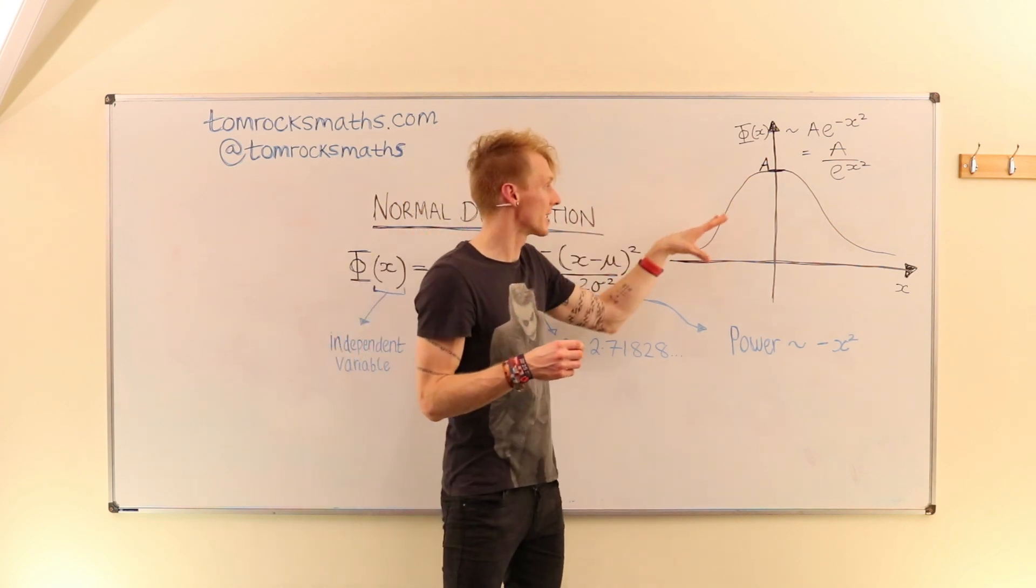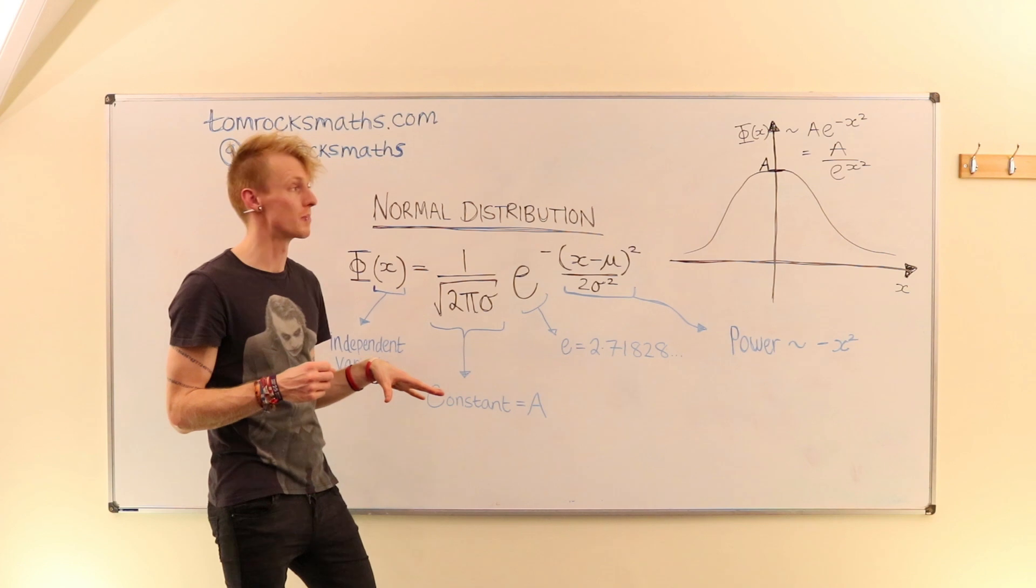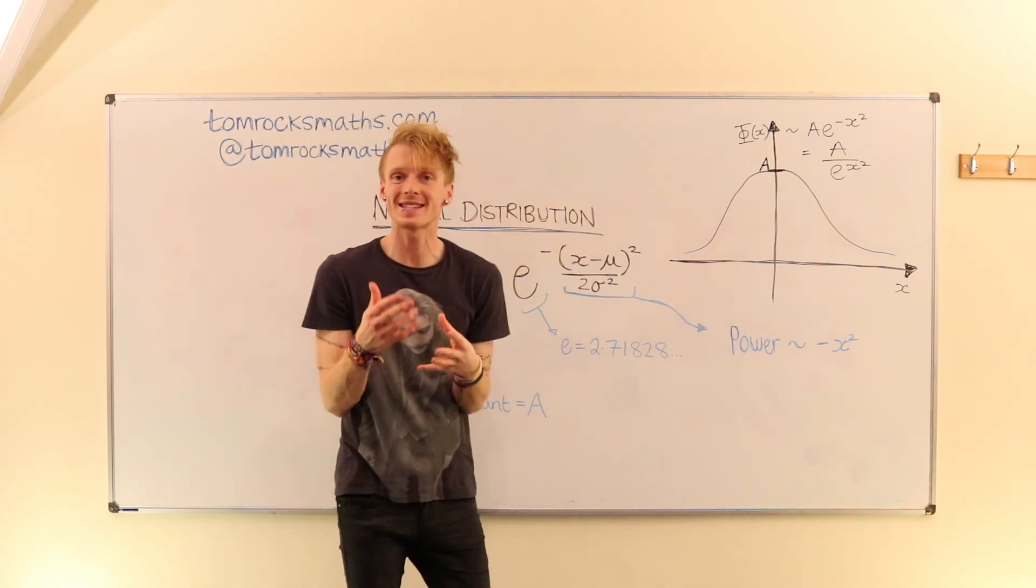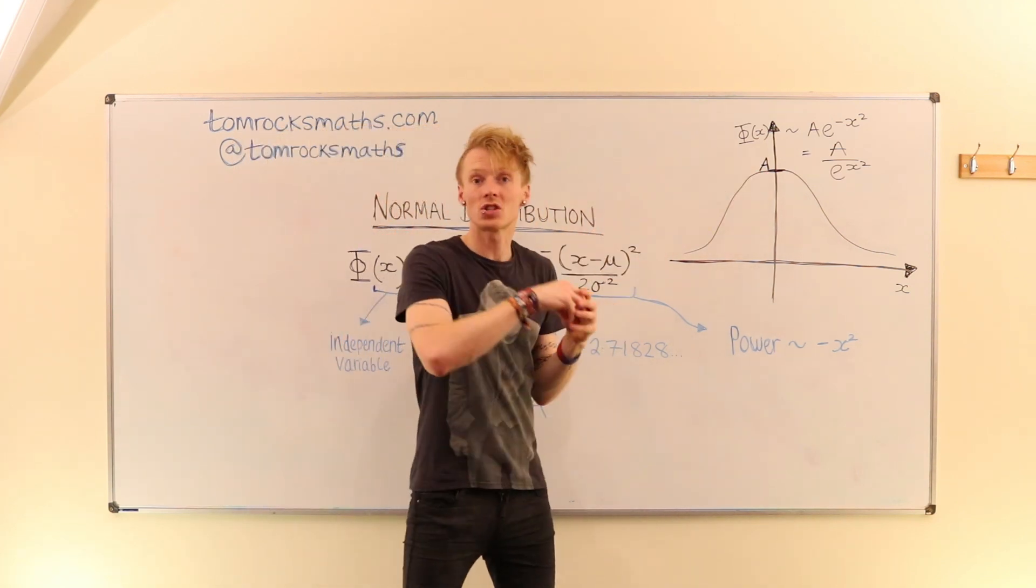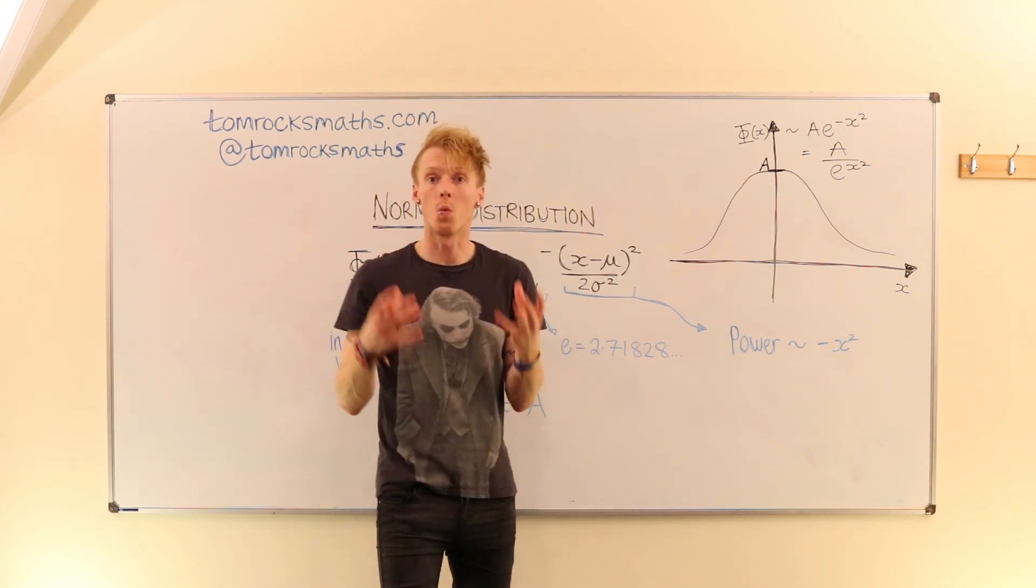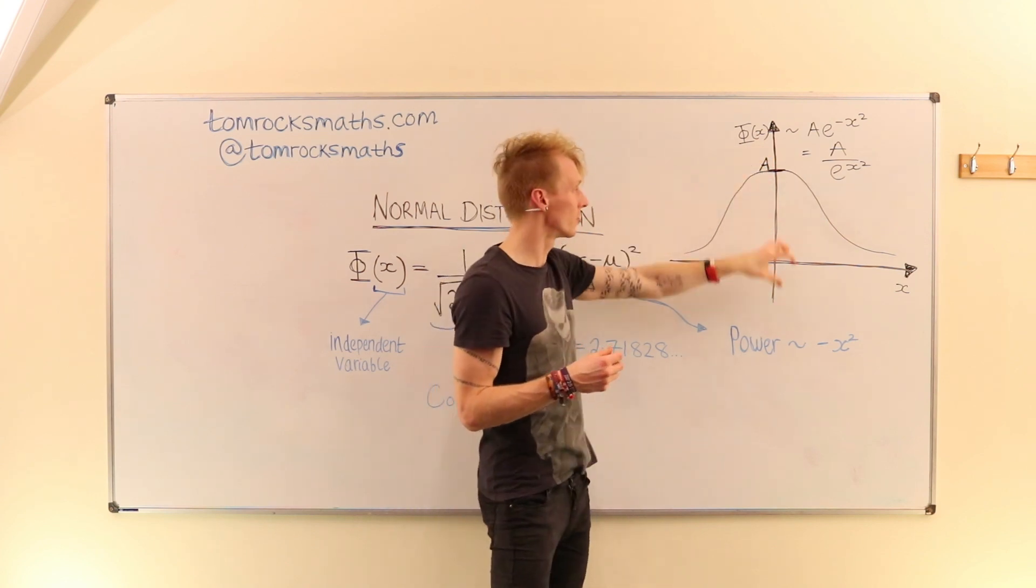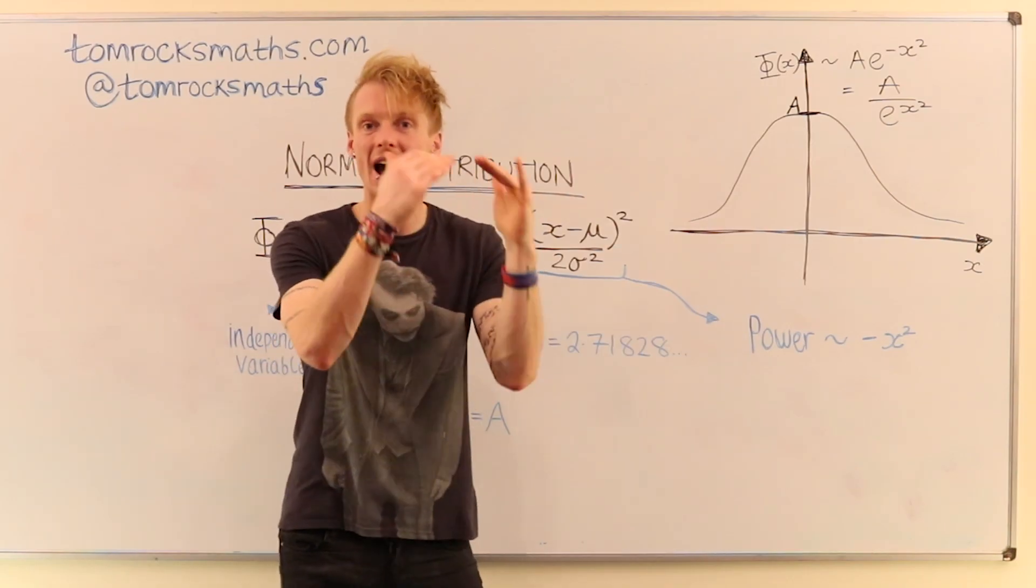Now that we understand this lovely bell-shaped curve that's formed by plotting the normal distribution, you can hopefully begin to see how this relates to all of those real-world data sets that I mentioned in layer 1. Because if you line up your peak here, this central value, if you line that up with your average,